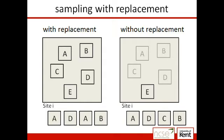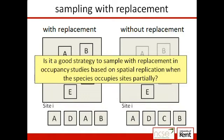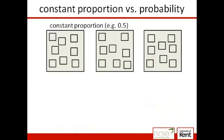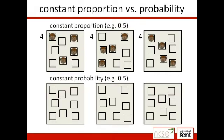In my paper, I re-examined this problem and reconsidered the general recommendation of sampling with replacement given by Kendall and White. The question is: is it a good strategy to sample with replacement in occupancy studies based on spatial replication when the species occupies sites partially? Kendall and White looked at the specific case in which all occupied sites contained a fixed proportion of occupied subunits. In my paper, I also consider a second scenario in which each spatial subunit at occupied sites has a constant probability of being occupied, resulting in a variable number of subunits being occupied by the species. One can expect this second scenario to be more appropriate in many situations, as it does not impose a fixed number of occupied subunits within each sampling site, which will often be a reasonable assumption since sampling sites are defined by the study and are therefore not intrinsically tied with a constant proportion of occupied subunits.